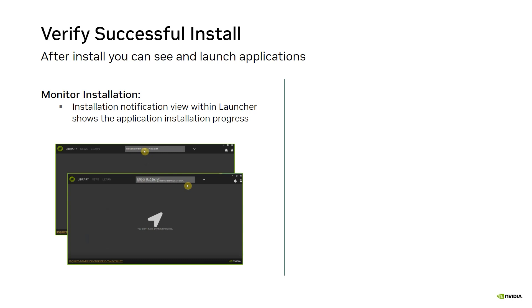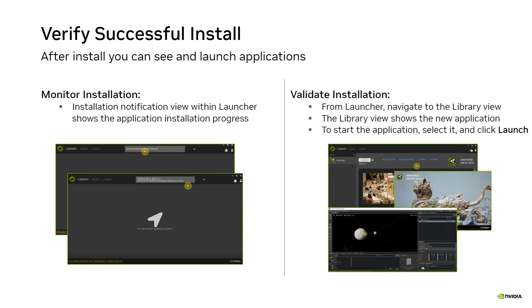From the launcher, navigate to the library view, select the Create application, and click Launch. Congratulations — you've installed your first app using the Enterprise Launcher. It's important to note that while you installed the Create application, the process is the same for any application.